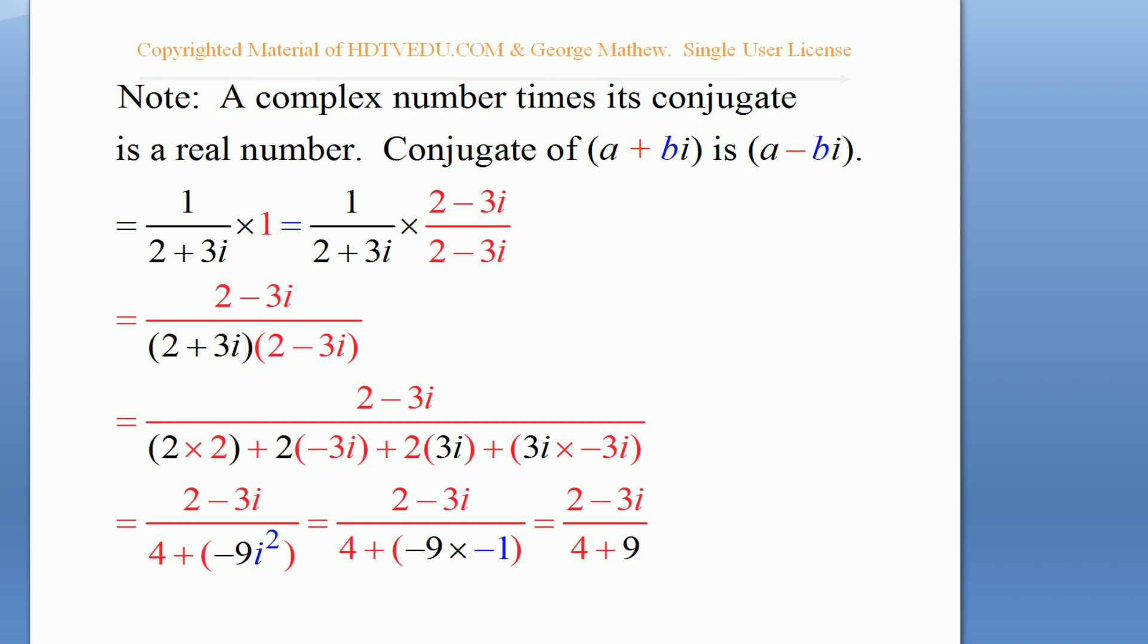Alright, so we are given 1 over 2 plus 3i. 1 over 2 plus 3i is the same as 1 over 2 plus 3i times 1. We replace 1 with 2 minus 3i over 2 minus 3i.